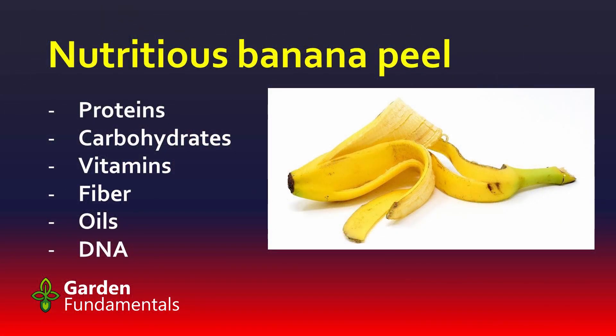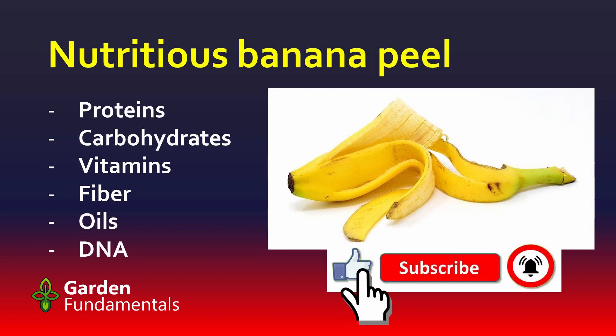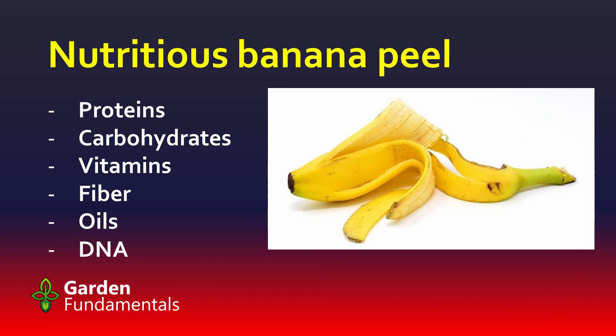Online you see things like nutritious banana peels. People will take banana peels, put them in water, let them sit for several days — the water goes a little brown — and then they say this is really great fertilizer. Well, it turns out that water has almost nothing in it. Bananas are made up of larger chemicals: proteins, carbohydrates, vitamins, fibers, oils, and DNA. Plants can't use any of this. If we give a plant some protein, it just sits there — the plant will starve.